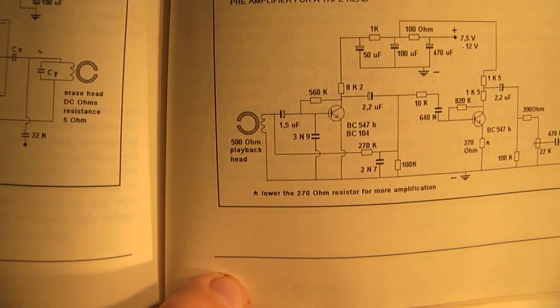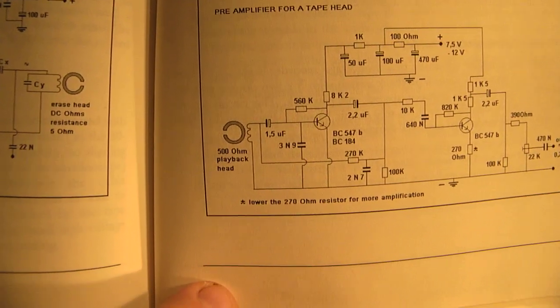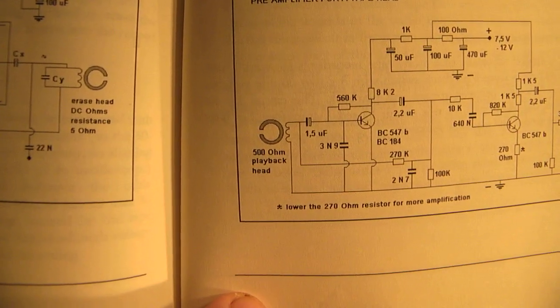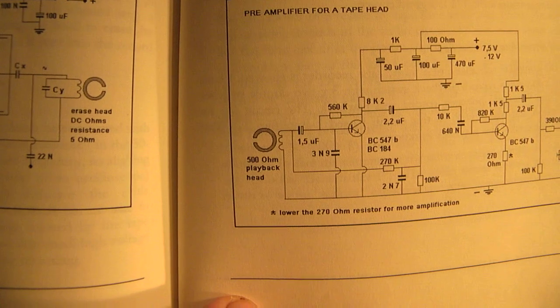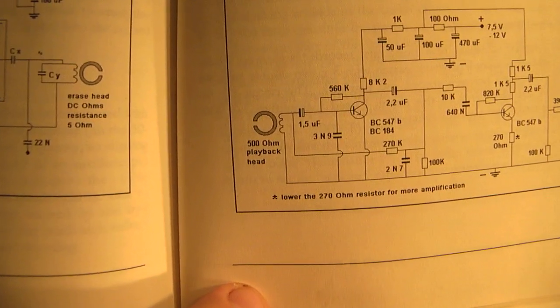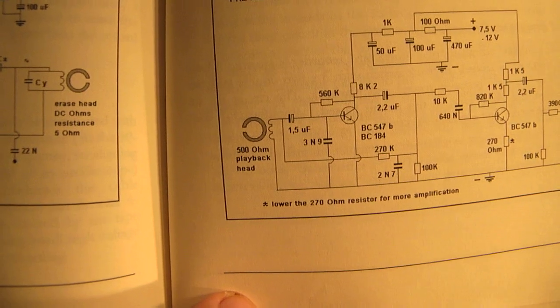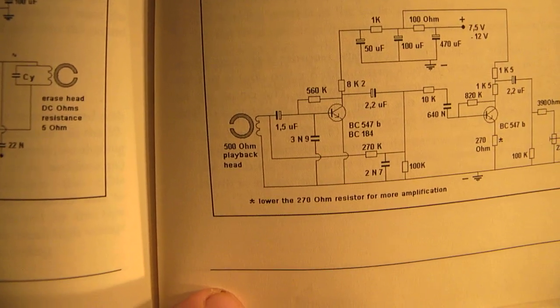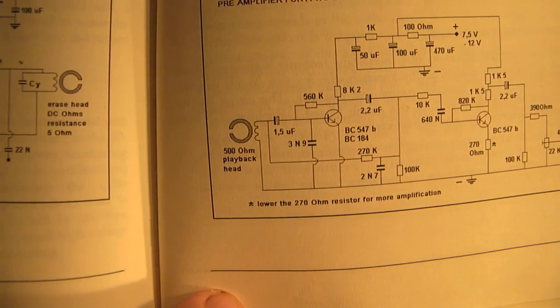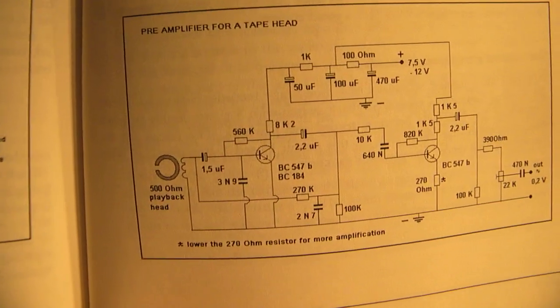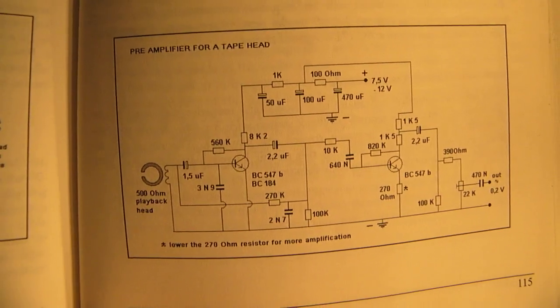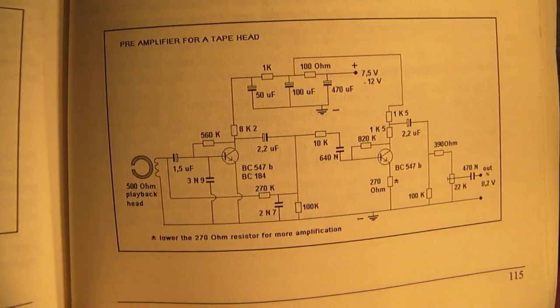It needs extreme amplification because the voltages that are generated when the tape flows alongside the playback head are tiny, very tiny - perhaps 50 microvolts or so. That's the reason why we use here a two-stage amplifier with extreme amplification.